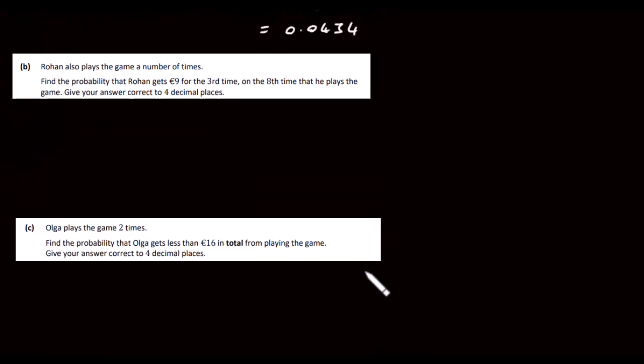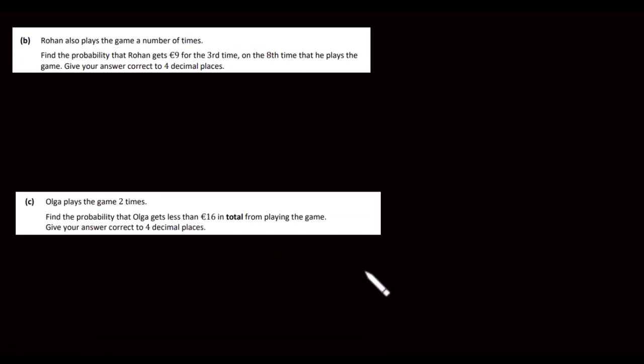Okay, so that's part A. Let's have a look at part B. Rowan plays the game a number of times. Find the probability that Rowan gets 9 euros for the third time on the eighth time that he plays the game. Give your answer correct to four decimal places.